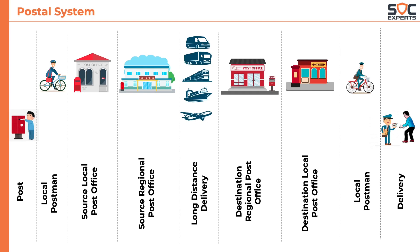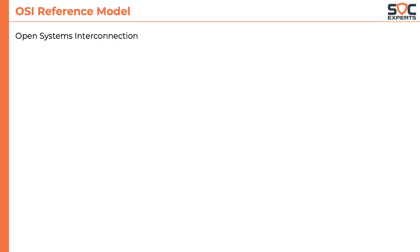Similarly, when we try to understand how communication between two computers works, it is a good idea to break down the entire communication into different layers. This is done by the OSI reference model. OSI stands for Open Systems Interconnection. It was developed and proposed by ISO, which stands for International Standards Organization.